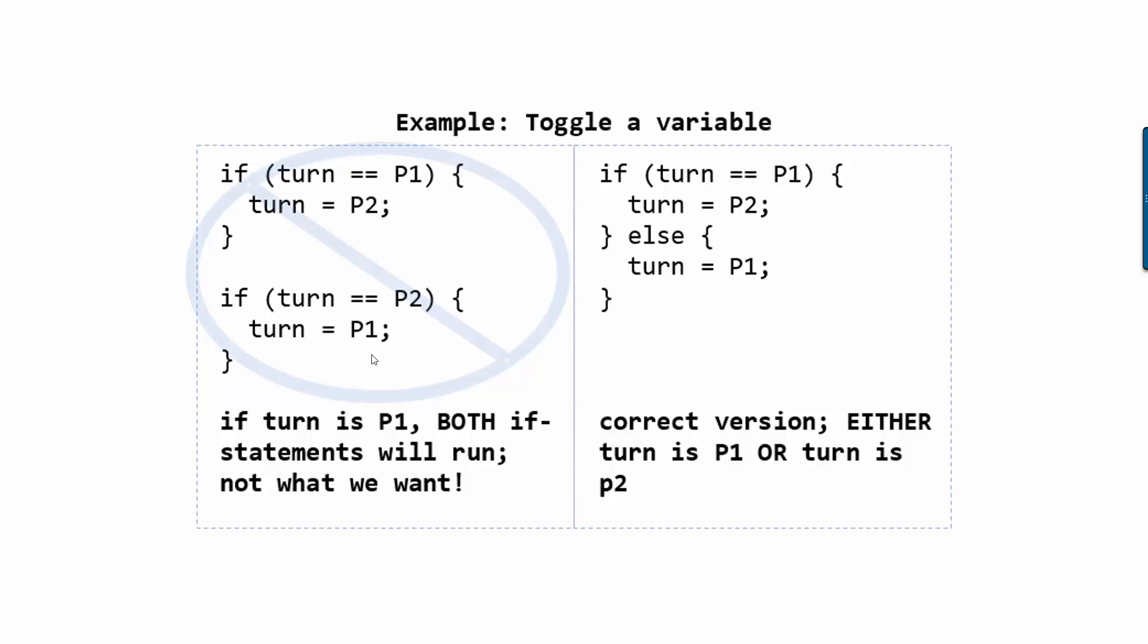So the problem with this is we only want one of these two things to happen each time we run it. Either it's player one, and we want to switch it to two, or it's player two, and we want to switch it to one. On the left here, if player turn equals one, both if statements are actually going to run because we'd say is turn equal to player one. And in my example, the answer is yes.